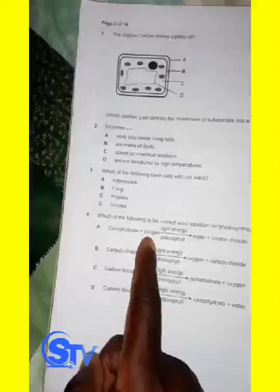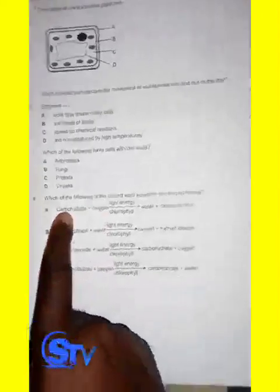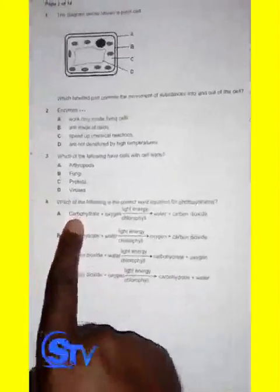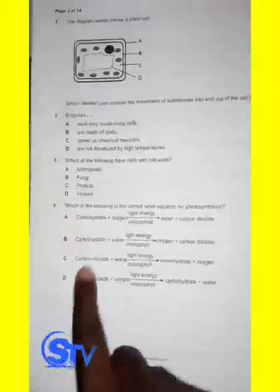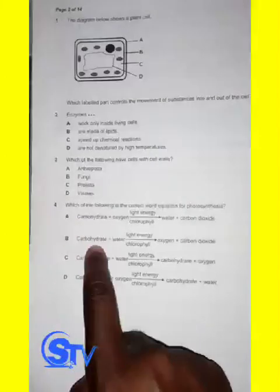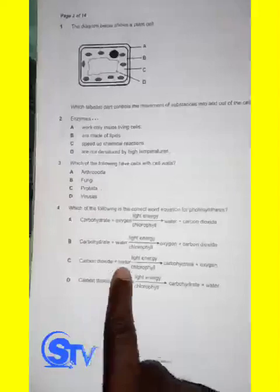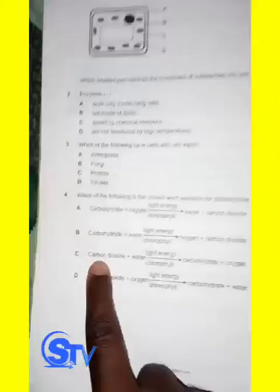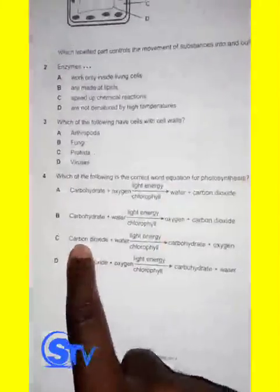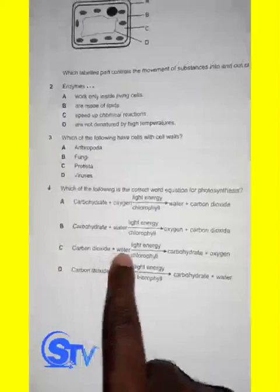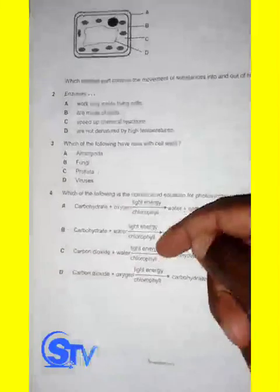This option is wrong because we need to begin with carbon dioxide. Let's check option C. It says carbon dioxide plus water, light energy, chlorophyll, produces carbohydrate plus oxygen.